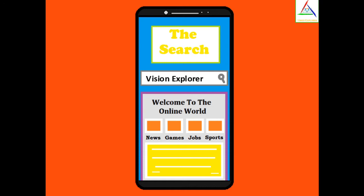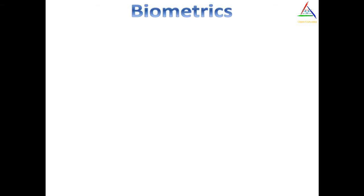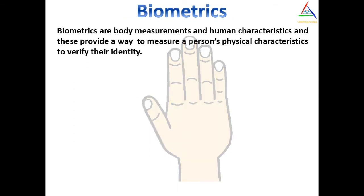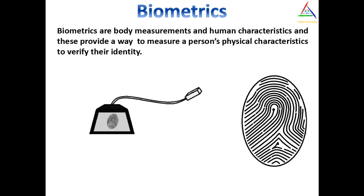So to understand this fingerprint in more detail, let's get started. First, let's know the key term for this, which is biometrics. Biometrics are the body measurements and calculations related to human characteristics, and these provide a way to measure a person's physical characteristics to verify their identity.